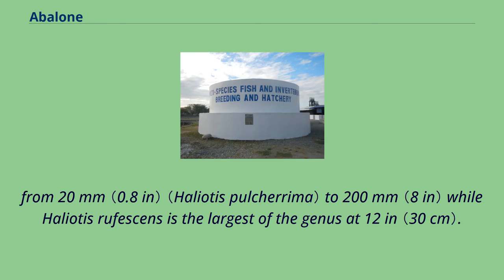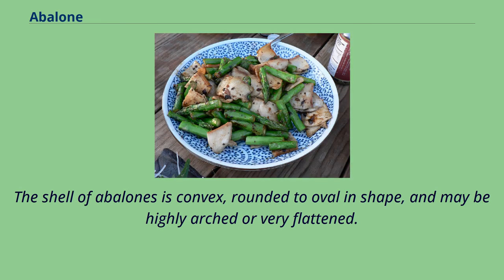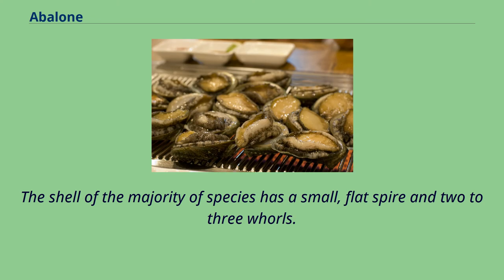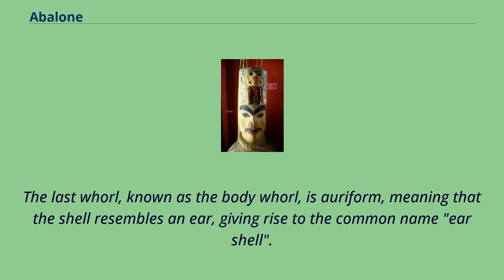Abalone size ranges from 20 mm to 200 mm, while Haliotus rufescens is the largest of the genus at 12 inches. The shell of abalone is convex, rounded to oval in shape, and may be highly arched or very flattened. The shell of the majority of species has a small, flat spire and two to three whorls. The last whorl, known as the body whorl, is auriform, meaning that the shell resembles an ear, giving rise to the common name ear shell.